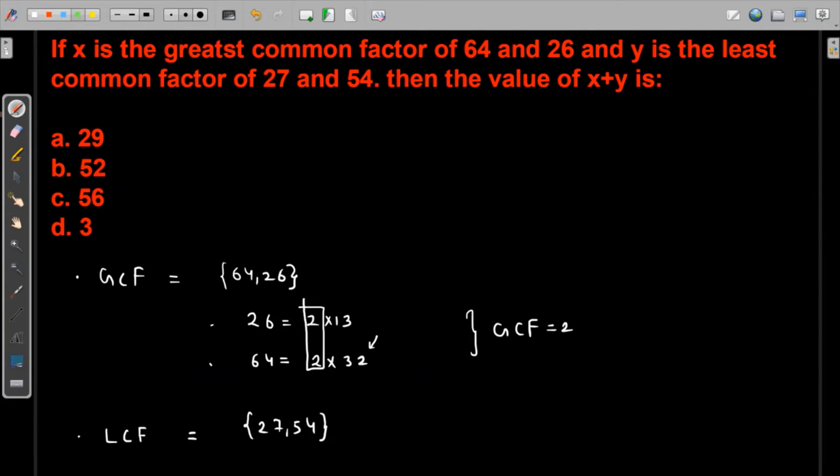For 27, you know that the least common multiple—sorry, the least common factor—will be 1, because 1 times 27 is 27. And we are looking for the least number which can divide both. So definitely 1 is the least number which can divide both of them.